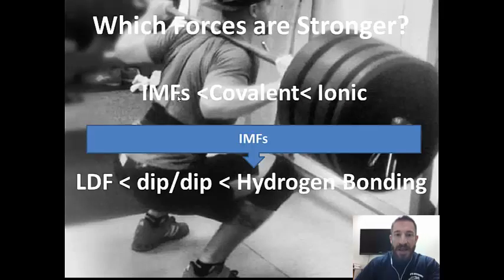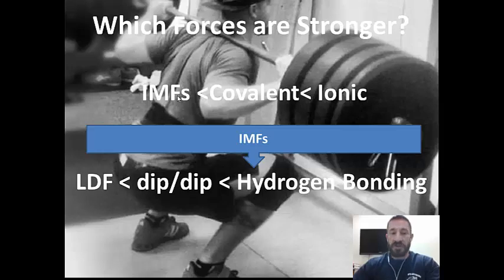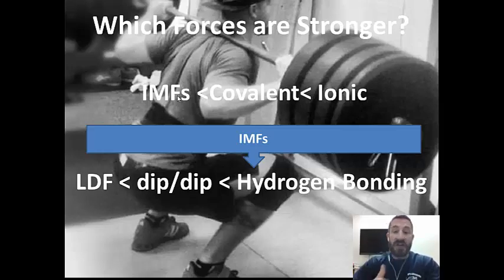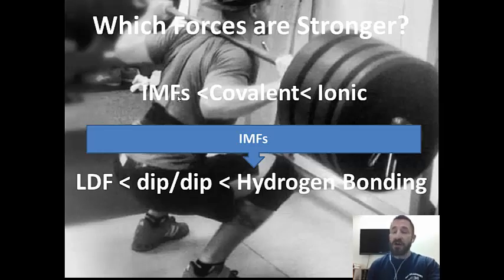Today we're going to talk about the difference between intermolecular forces. The intermolecular forces are London dispersion force, dipole-dipole, and hydrogen bonding. We're going to differentiate between those three forces, which are all weaker than covalent bonds.